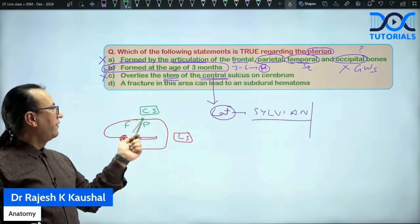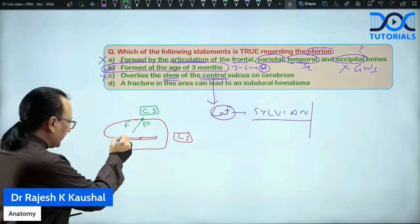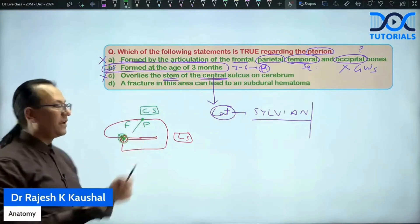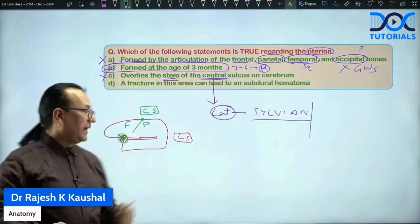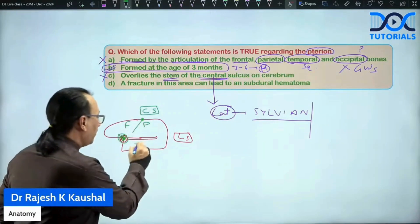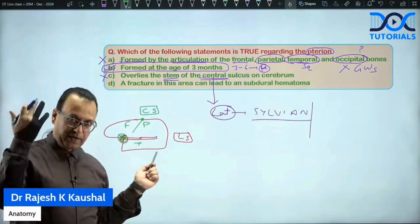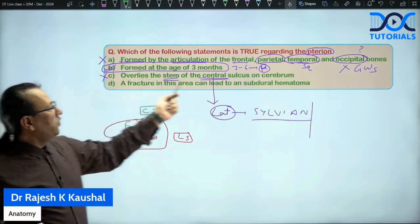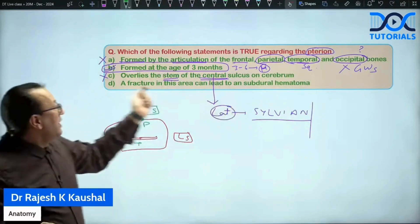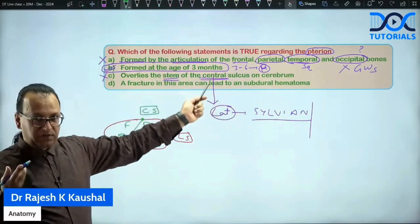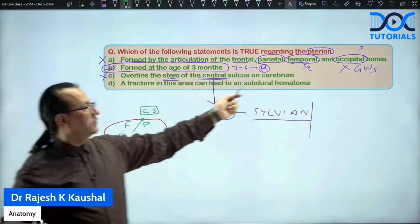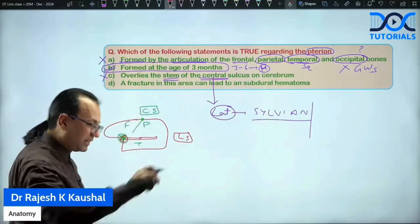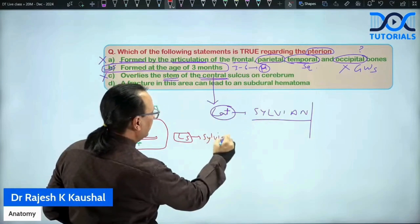The question is asking about central sulcus. Where is central sulcus? This is central sulcus. And what central sulcus does? It separates frontal lobe from parietal lobe. But that is not where we have pterion. Then where is pterion? Pterion is right here at the stem of the lateral sulcus. And what the lateral sulcus on cerebrum does? It is separating the temporal lobe inferiorly and superiorly it will be frontal and parietal. So that means choice C is also wrong. And instead of writing overlies the stem of central they should have written lateral sulcus which is also called sylvian sulcus. This lateral sulcus has one more name and that name is the sylvian sulcus.